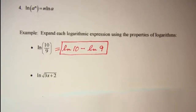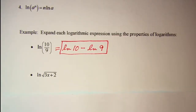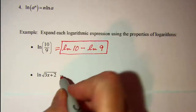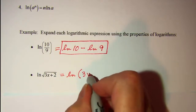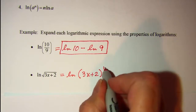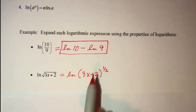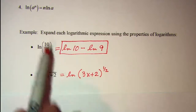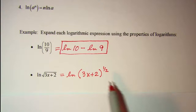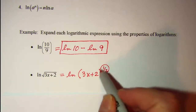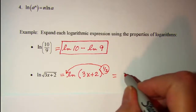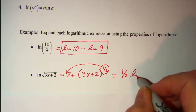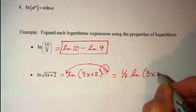Another one. Any time you have a radical, you can write that as an exponential. So let's rewrite this as the ln of 3x plus 2 raised to the one-half power. Now because I have an exponent, I can use the fourth property, which says that I can bring that exponent out in front and multiply it by the logarithm. This is equal to one-half times the ln of 3x plus 2.